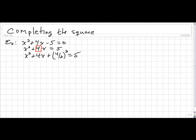Anything we do to one side of an equation, we have to do it to the other. So we added (4/2)² on this side, and so now we must add (4/2)² on that side.